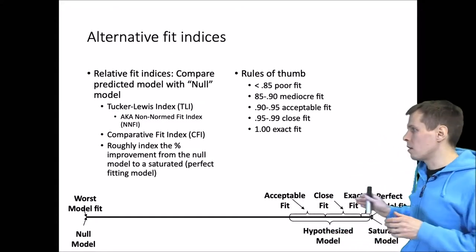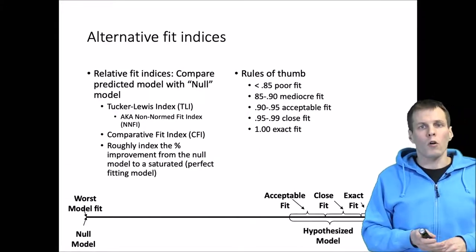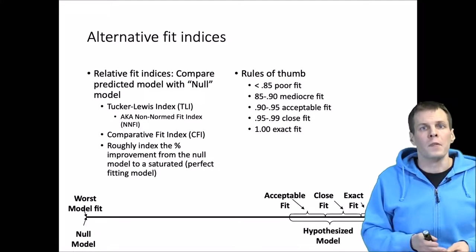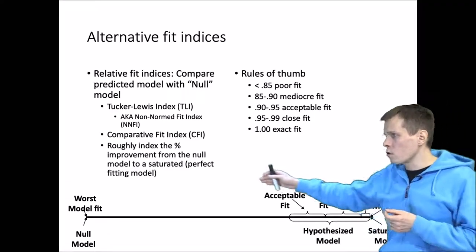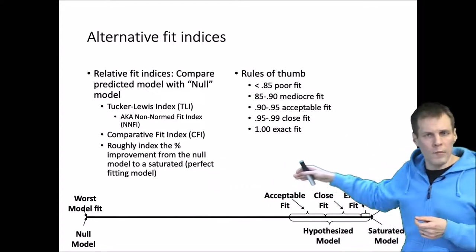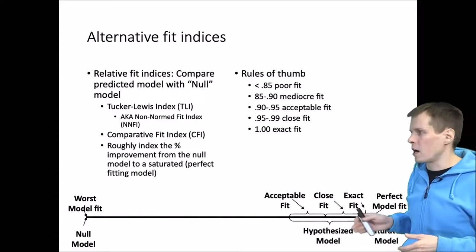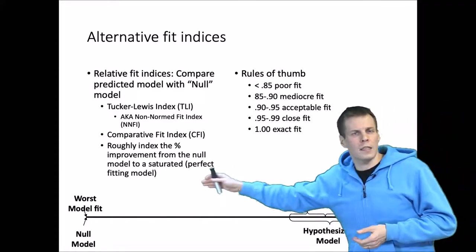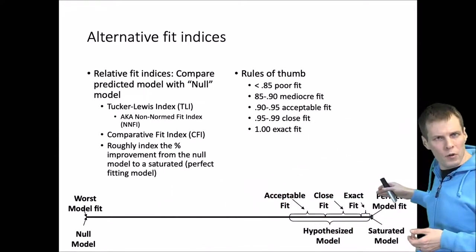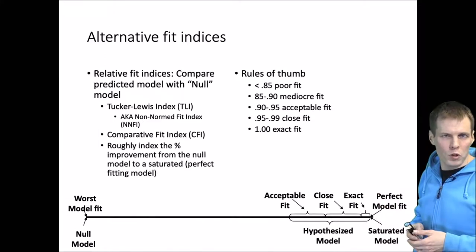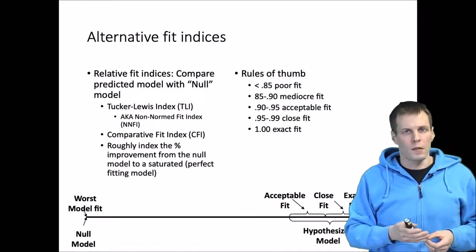On the other extreme we have the saturated model, which fits perfectly by allowing all covariances between indicators to be freely estimated. Comparative fit indices quantify how far from the worst possible model toward the best possible model we are on some metric. For example, a CFI of 0.95 means that starting from the worst possible model toward the best possible fitting model, we are 95% of the way. The TLI is similar — they just quantify the degree of misfit slightly differently.